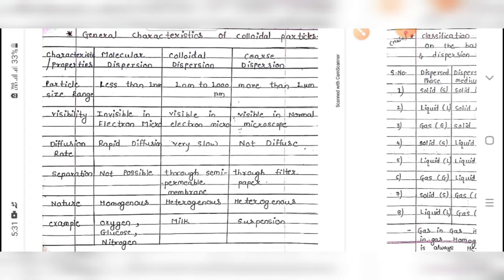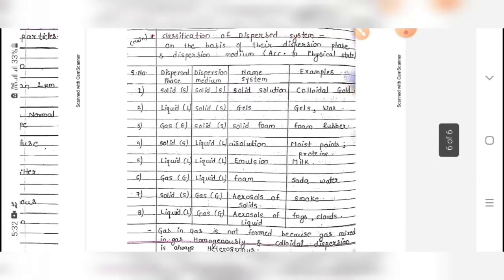Diffusion rate: rapid diffusion occurs in molecular dispersion; in colloidal dispersion diffusion rate is very slow; in coarse dispersion diffusion doesn't take place. Separation: not possible in molecular dispersion; possible in colloidal dispersion through semi-permeable membrane; possible in coarse dispersion through filter paper. Nature: molecular dispersion is homogeneous; colloidal dispersion is heterogeneous. Examples — molecular: oxygen, nitrogen, glucose; colloidal: milk; coarse: suspension.